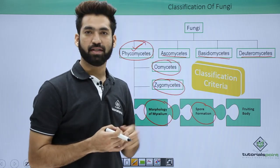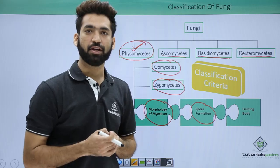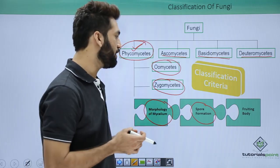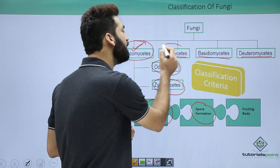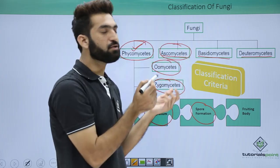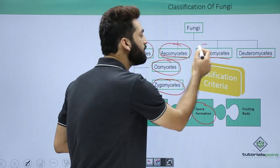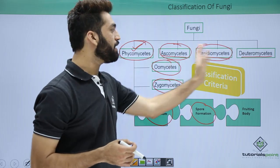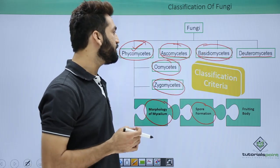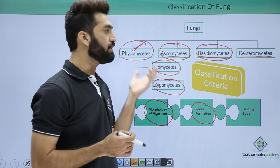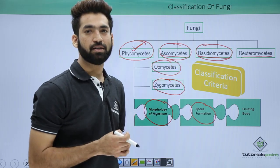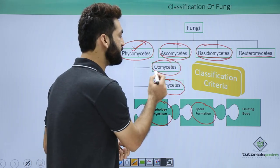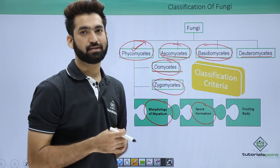Rest all are septate. The septa are found, maybe monokaryon or dikaryon. Fruiting body is observed in case of ascomycetes, which is ascocarp, and in case of basidiomycetes, which is basidiocarp. So there are different classes of fungus and we'll have to detail you about these different classes and their members. Next section, we'll be starting with oomycetes members, the oomycetes class.